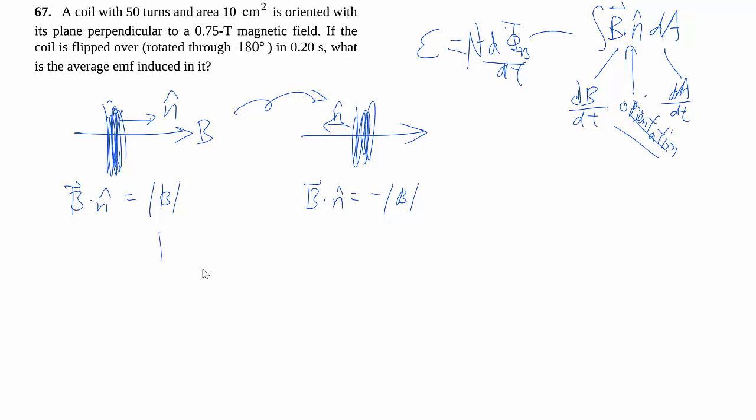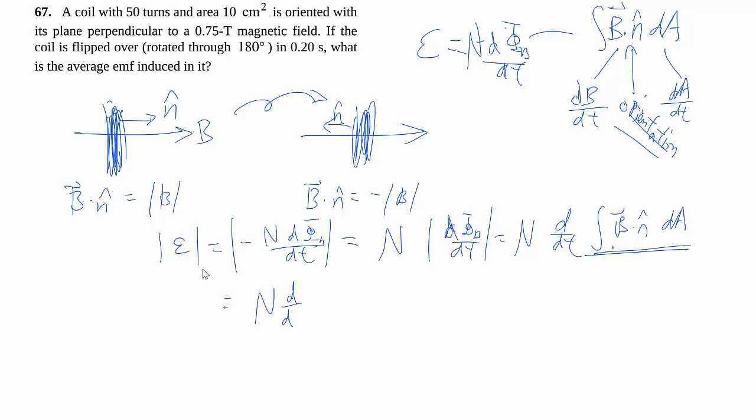So again, we're not so much concerned with the direction, so we're going to apply absolute value signs everywhere. We can rewrite this as d/dt, since B dot n will be constant for every single point along the area at any given time. The A can come out, and then we're left with this thing which we already know will change from positive B to negative B.